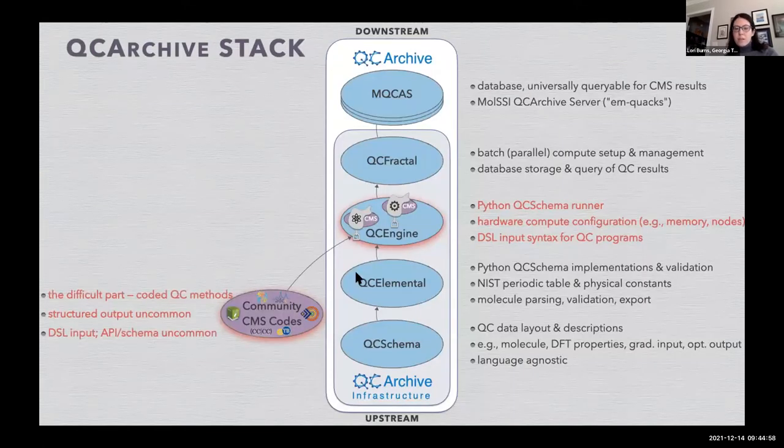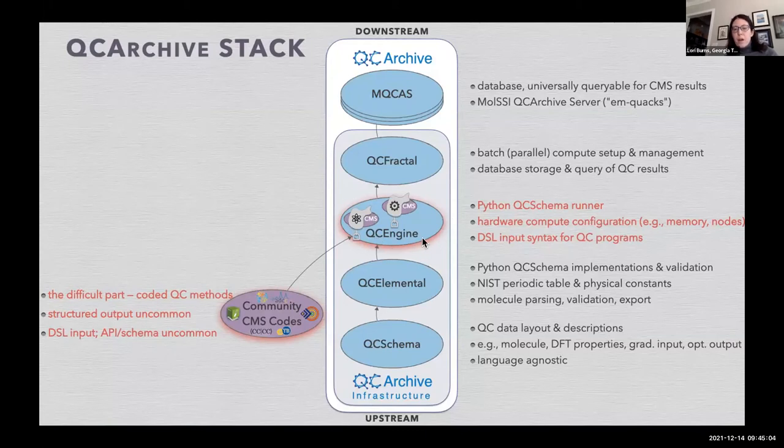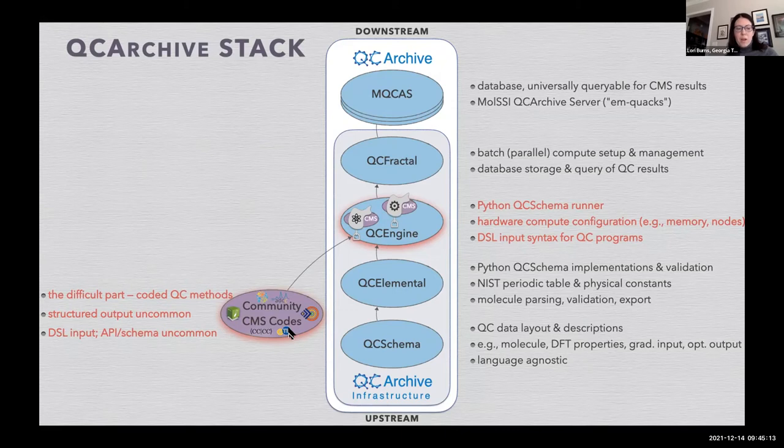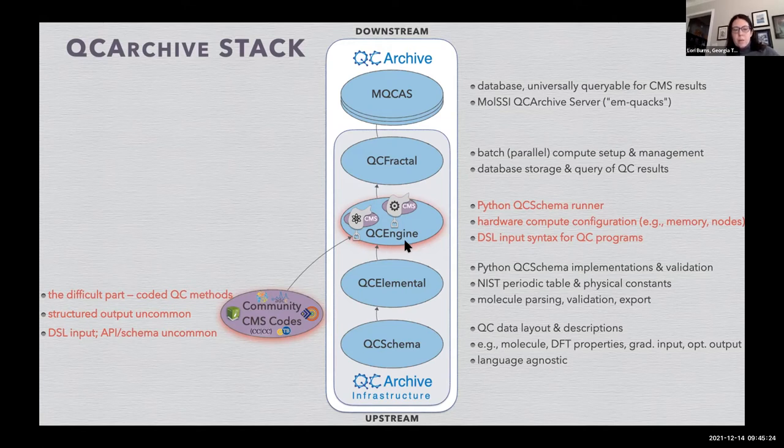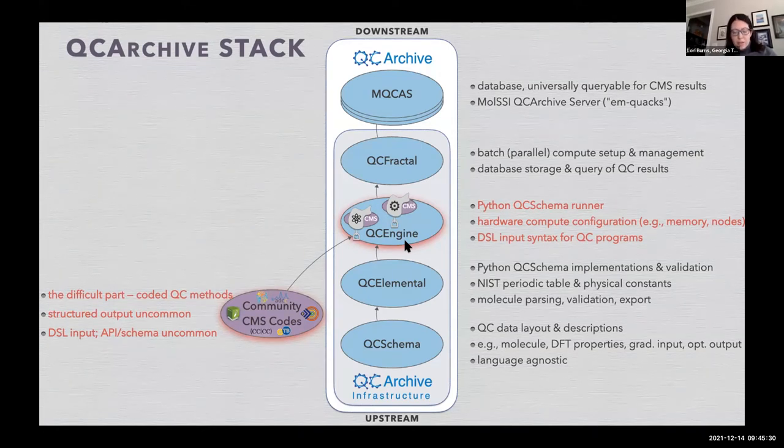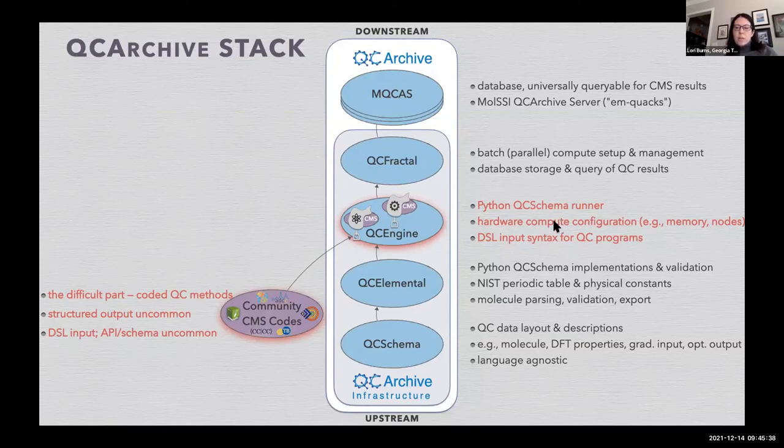Next up from QC Elemental is QC Engine. QC Engine is an input-output standardization layer. So it makes sure that any of the community codes that have done the hard work of encoding quantum chemistry methods but which tend to have domain-specific language input and output—it allows you to run any of these through atomic by specifying an atomic input and producing atomic output, atomic results. And also add some hardware compute configuration like specifying memory and nodes.